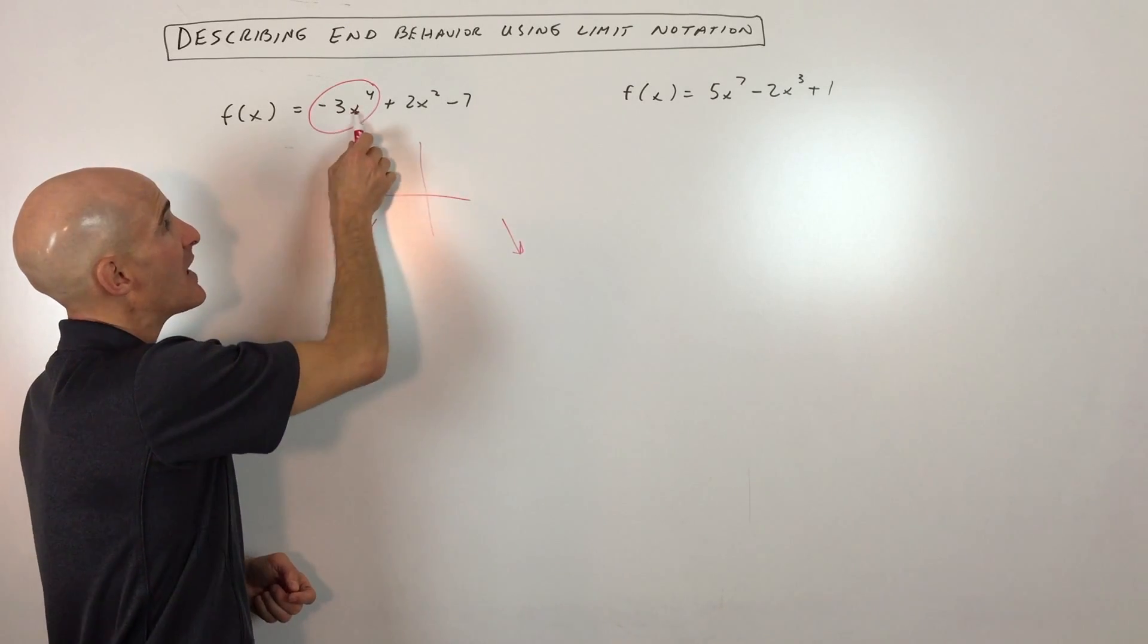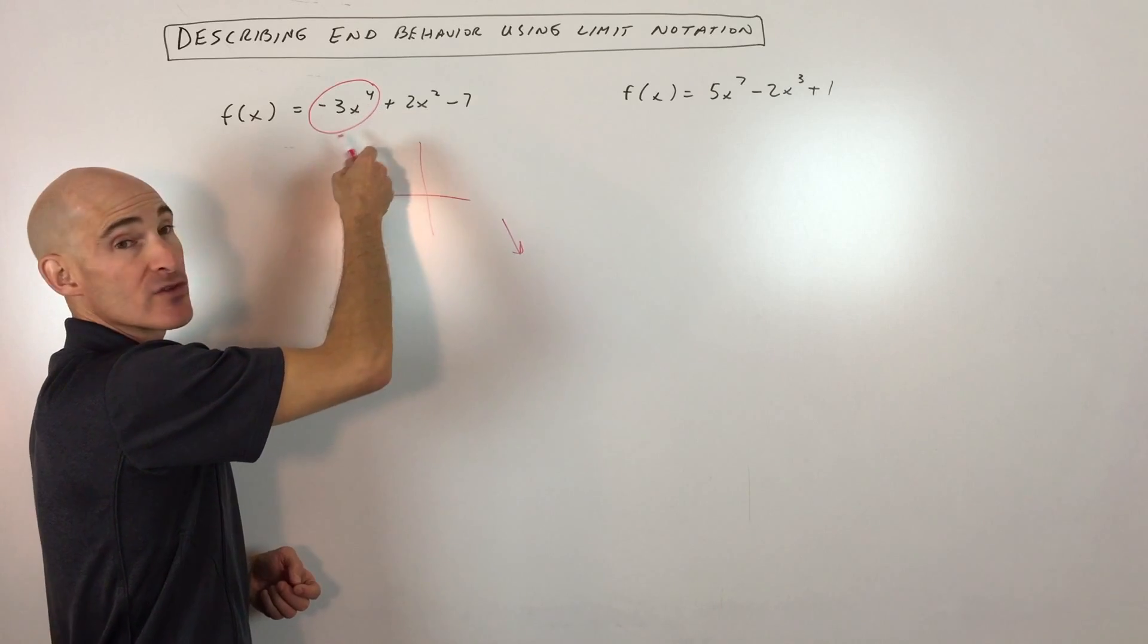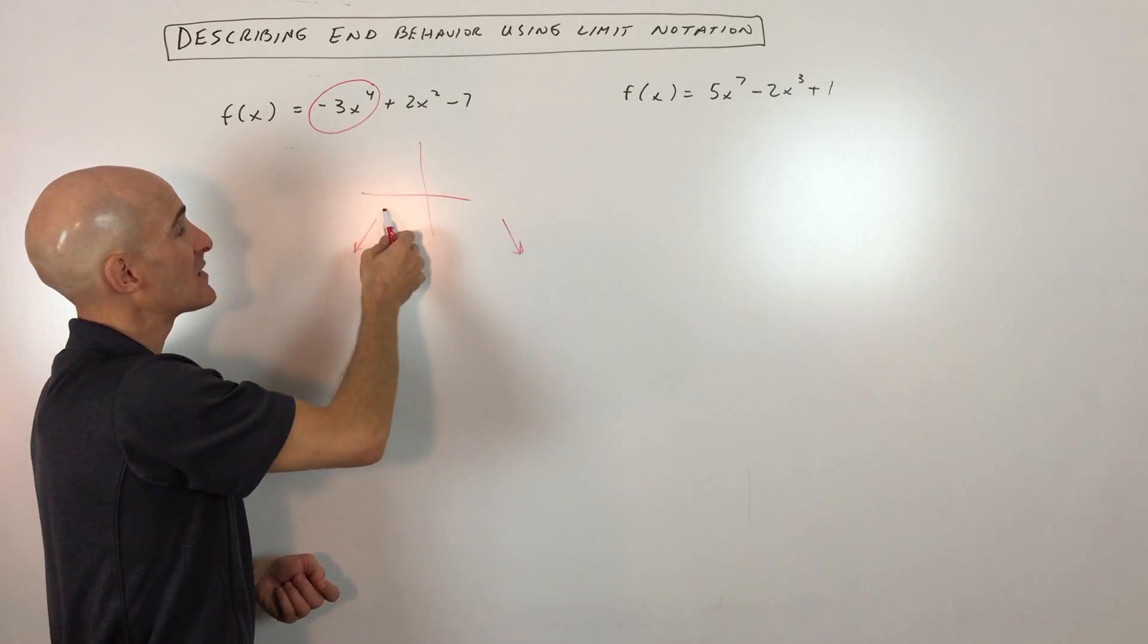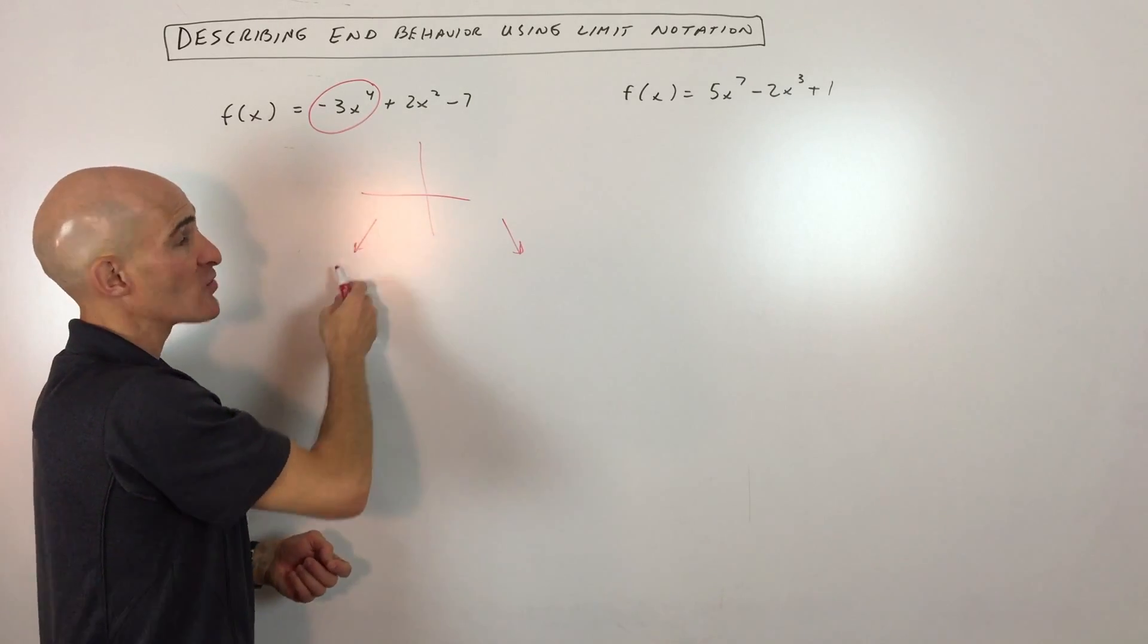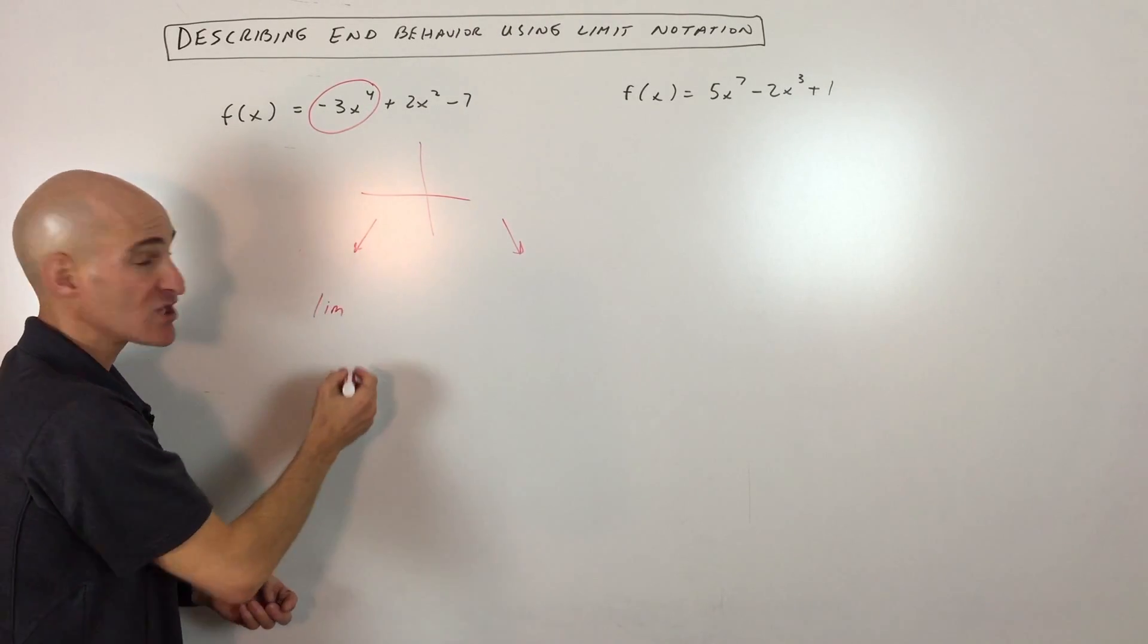Now, if I put in a negative 10, a negative to an even power is going to be positive. So negative 10 to the fourth is still positive 10,000 times negative 3 is negative 30,000. So I know that it's going down to the left. But what we want to talk about now is how do we write this in the limit notation.